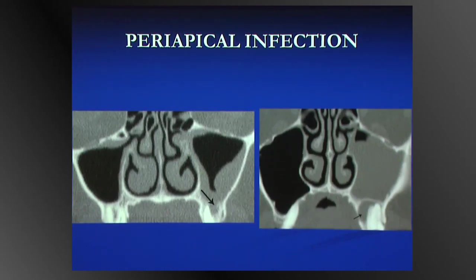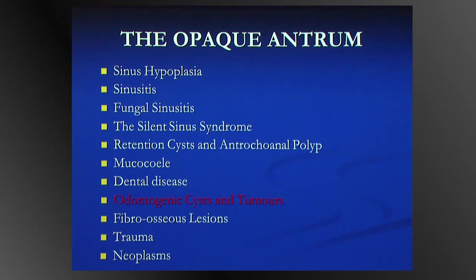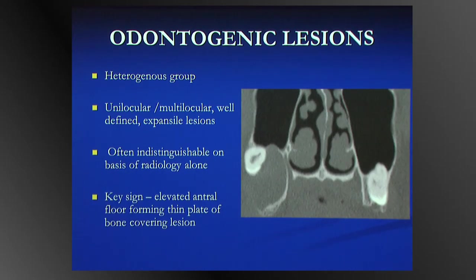You can see extensive dental disease associated with fairly extensive antral opacification. The other big dental group is the odontogenic cyst and tumour group. This is a heterogeneous group presenting as well-defined, multilocular or unilocular, low-density or expansile lesions. The out for all of us is that they are indistinguishable on the basis of radiology alone. You can get a clue based on relationship to a tooth or high-density within an entity, but the final arbiter is usually histology.